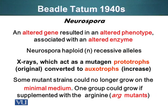Now, moving forward to the 1940s: the classic experiment of Beadle and Tatum. These scientists were studying a specific type of mold called Neurospora. They mutated this organism using X-rays as a mutagen, which resulted in an altered phenotype. They were able to associate the altered phenotype with an altered enzyme or enzyme activity.